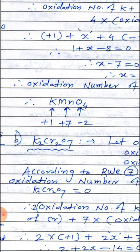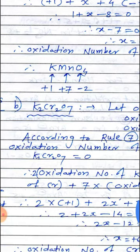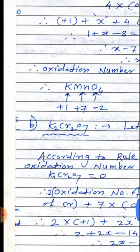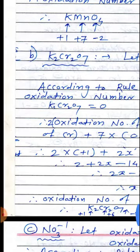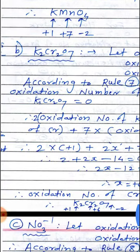Hence the oxidation number of manganese Mn in KMnO₄ equals plus 7. In this way we have to assign oxidation numbers.